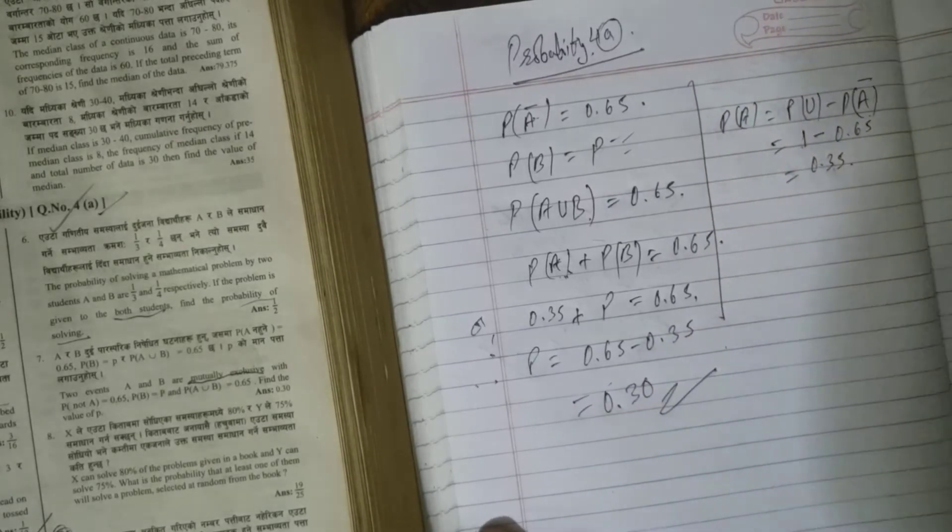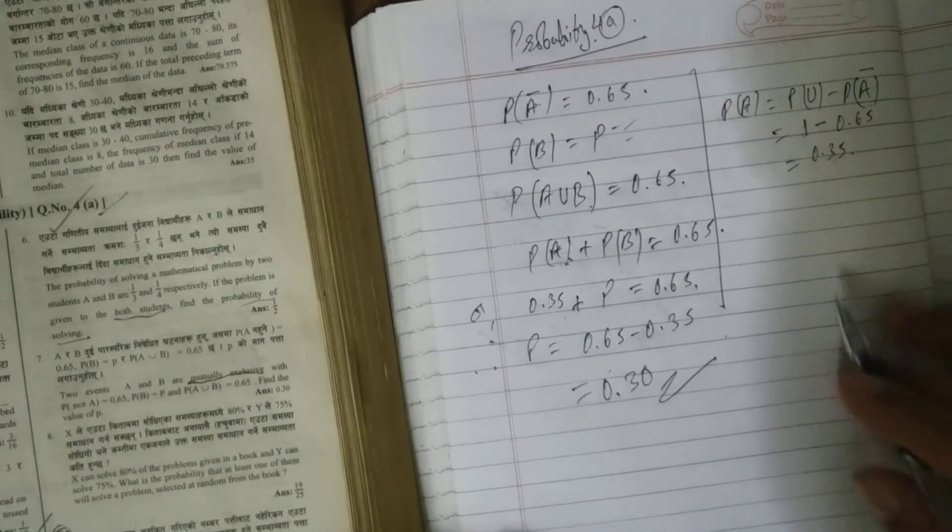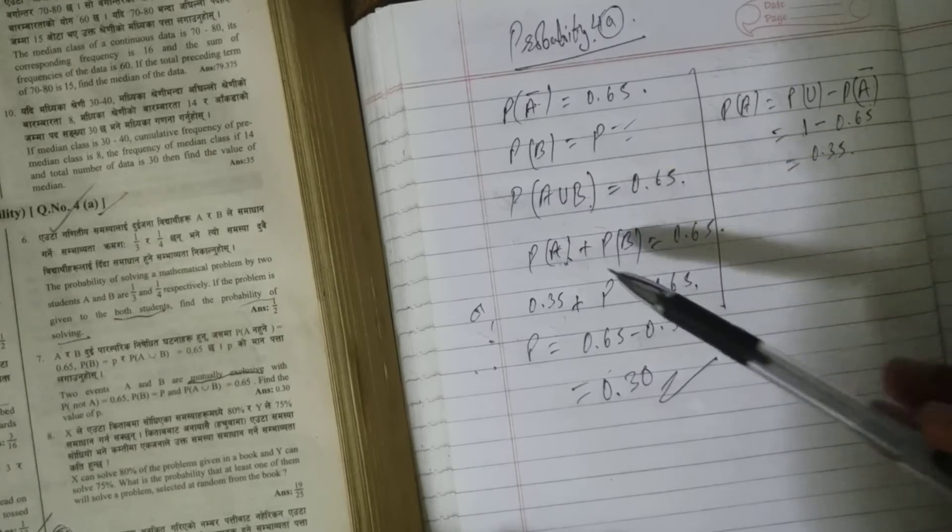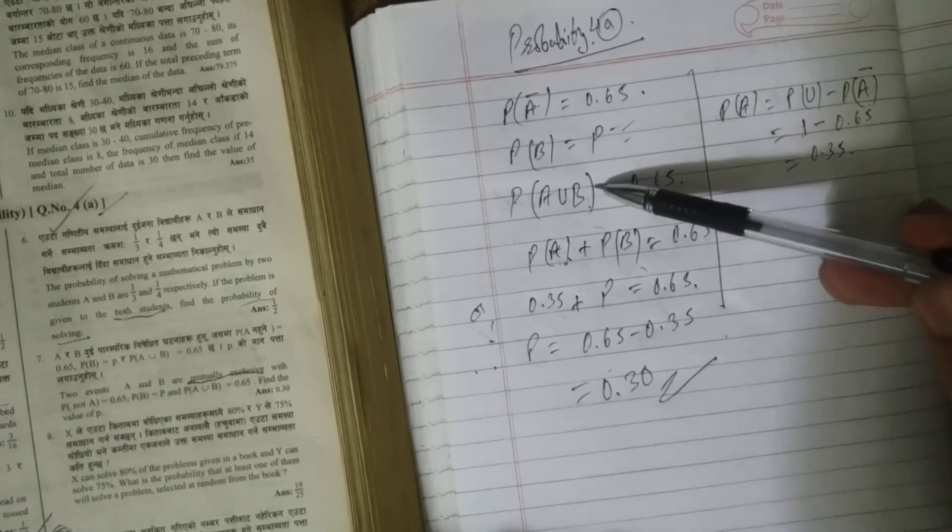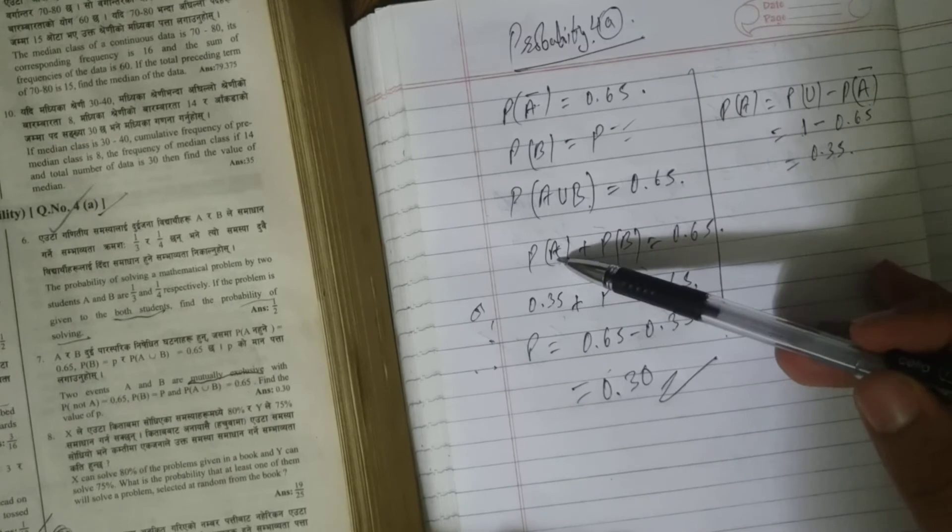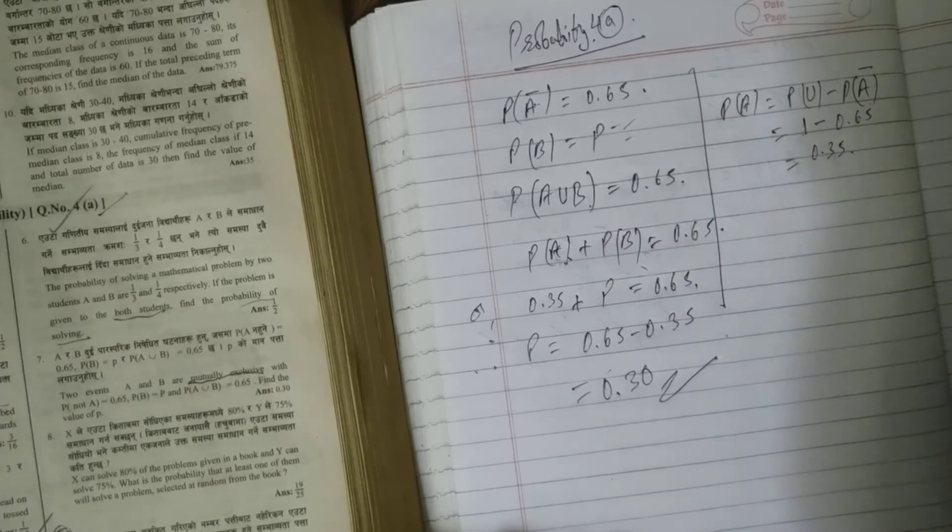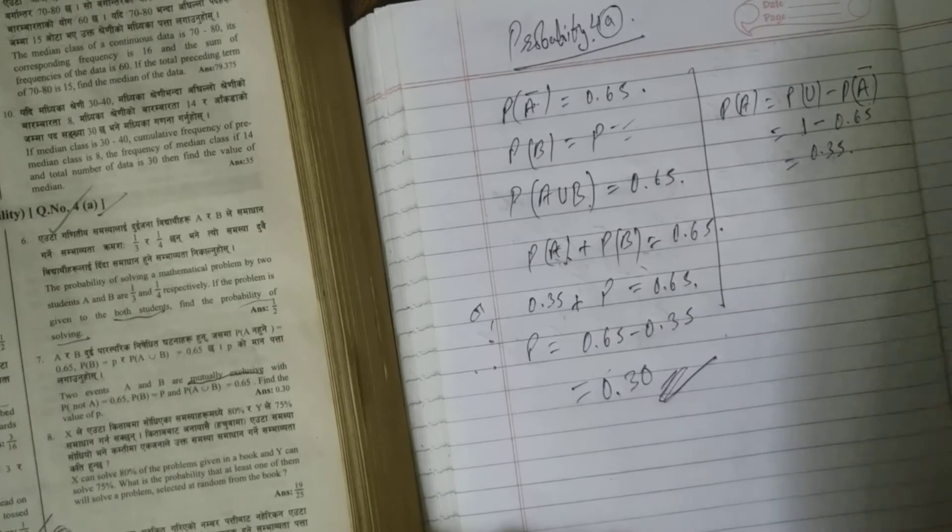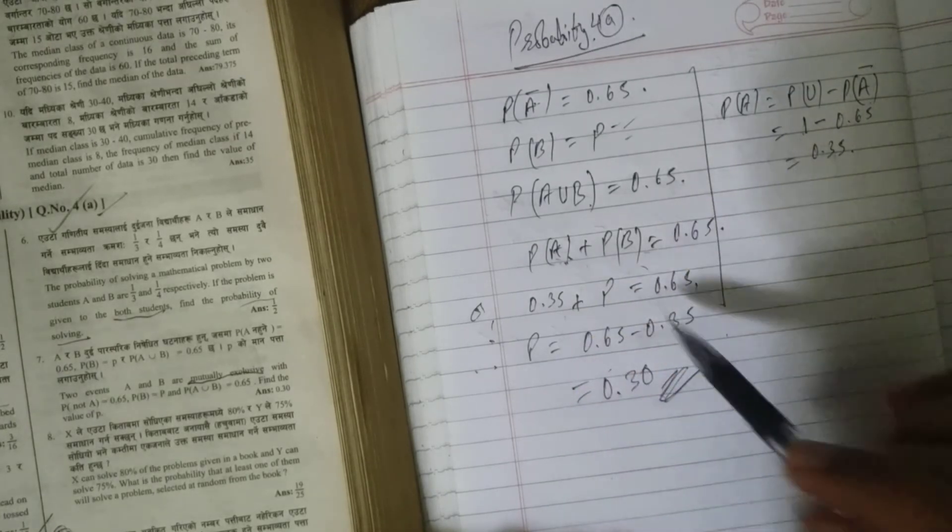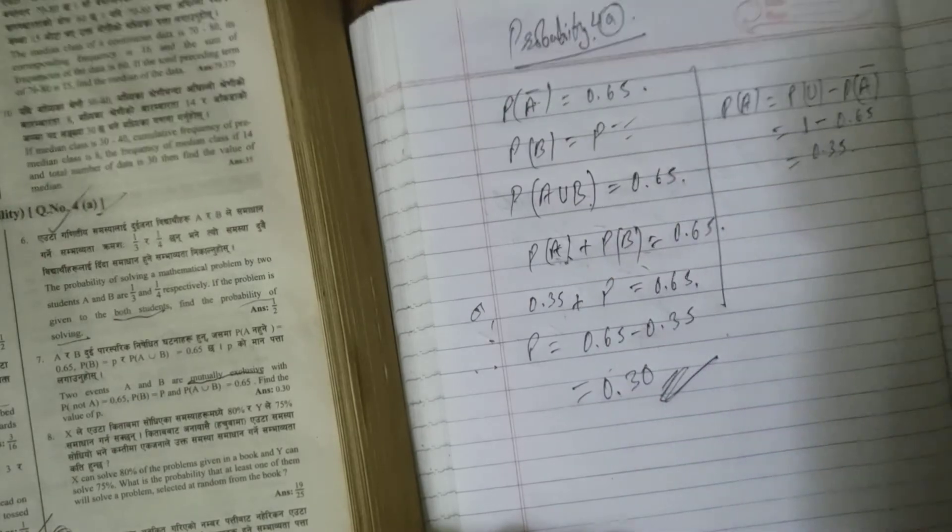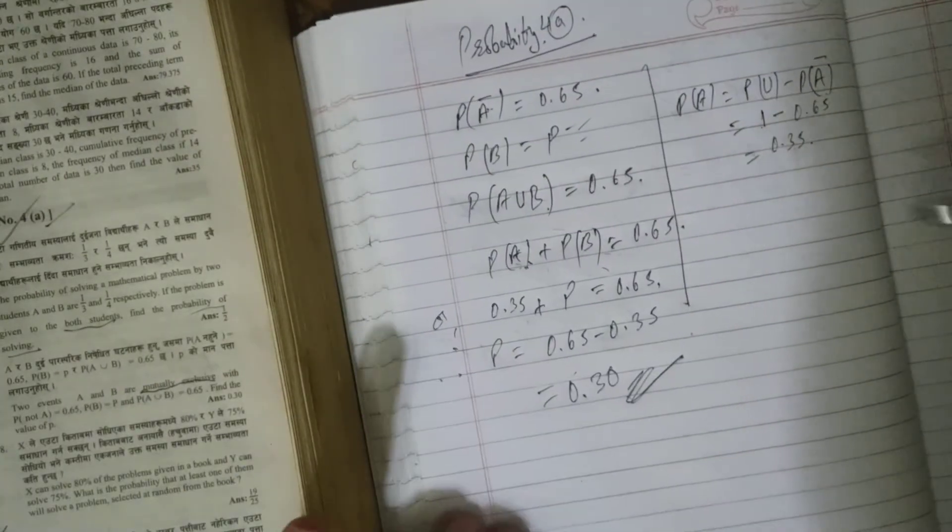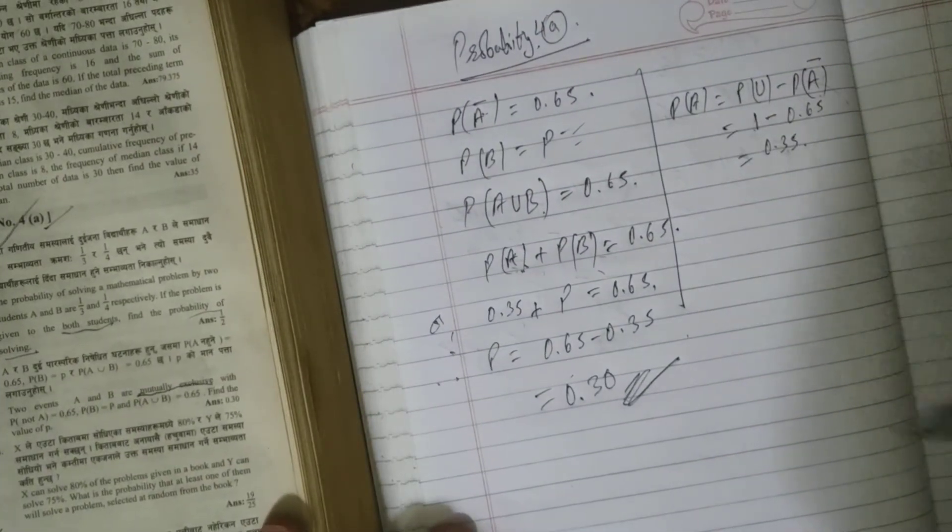Always remember, think of it from a formula perspective. Since we know A union B, A∪B is probability of A plus probability of B. Since these are mutually exclusive, that's why we don't need to multiply it. Always remember that. So this is how we solve this kind of problem.